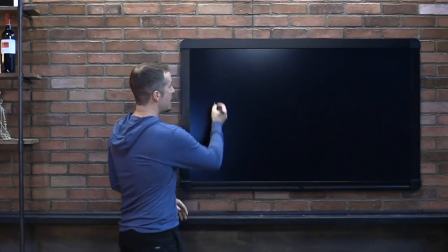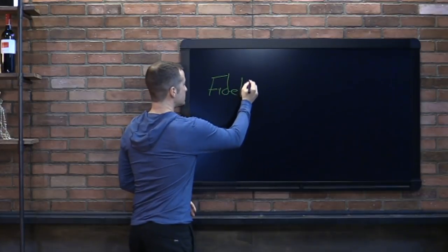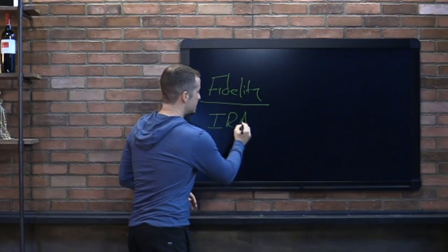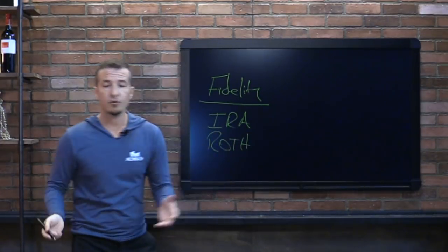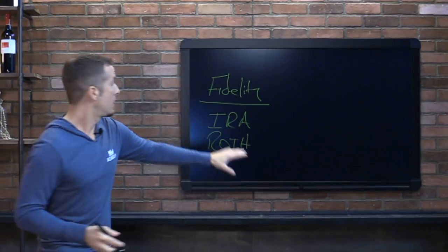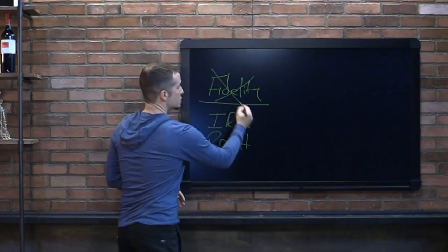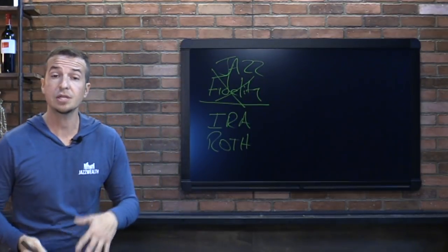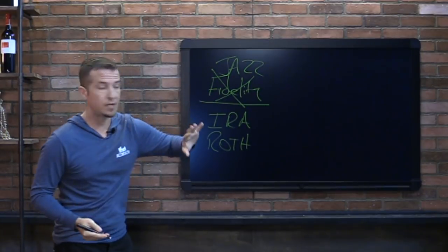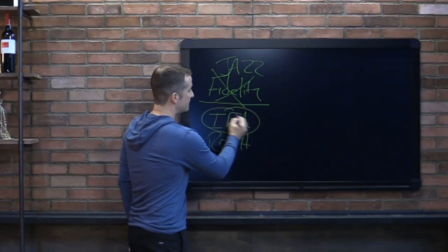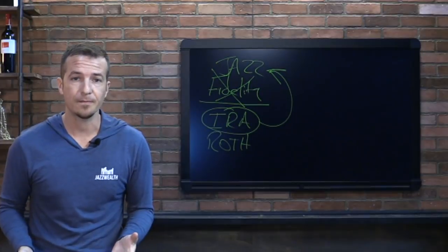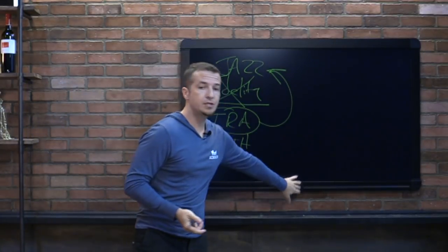Now a transfer is totally different. In a transfer, you'd simply be saying: I have a Fidelity account — it could be an IRA, a Roth IRA, whatever the account type is — and for whatever reason you've decided you'd like to move it to another company. Maybe you were using Fidelity and now you'd like to use Schwab or Jazz Wealth. You're not actually changing the account type — you're changing the custodian. So instead of having your IRA at Fidelity, you just move it over to Jazz Wealth or wherever. That's called a transfer. The account type stays the same; the custodian is what changes.